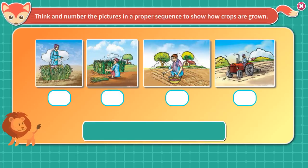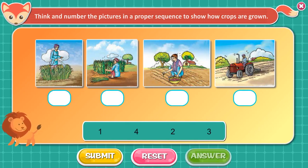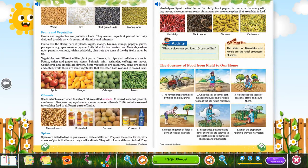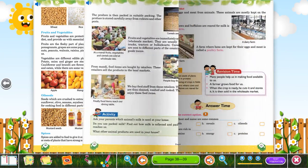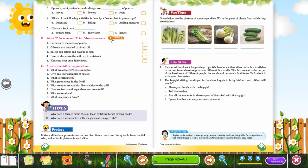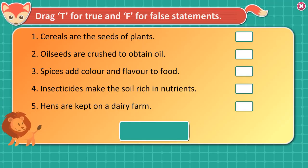Activity: Number the pictures in a proper sequence to show how crops are grown. Drag T for true and F for false statements.